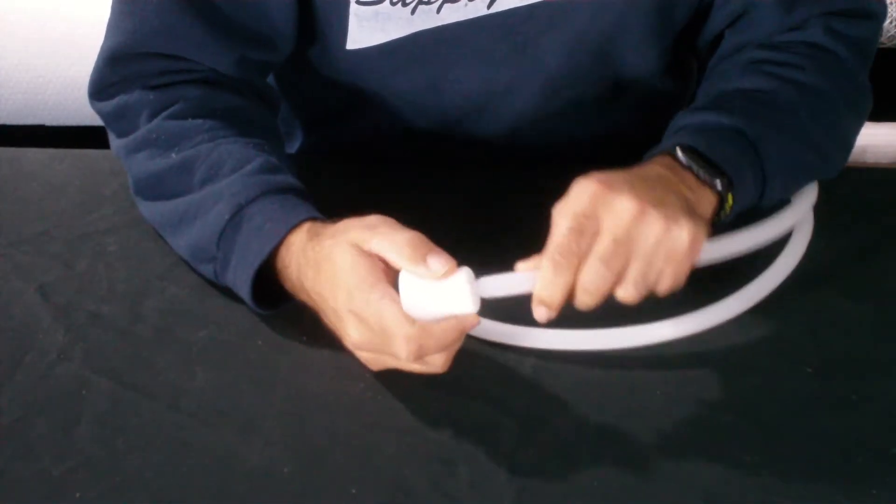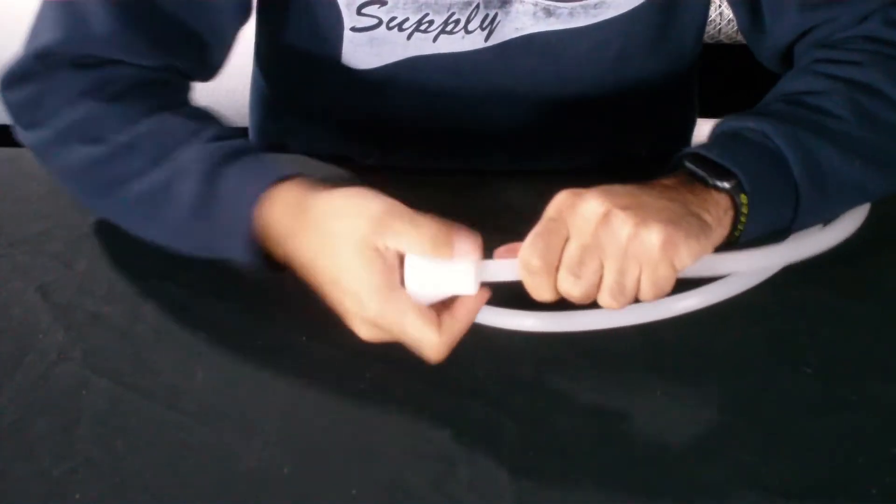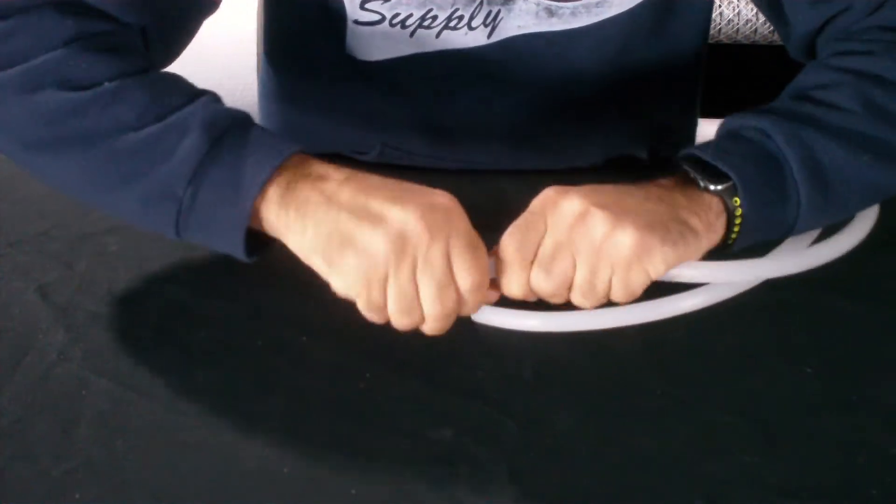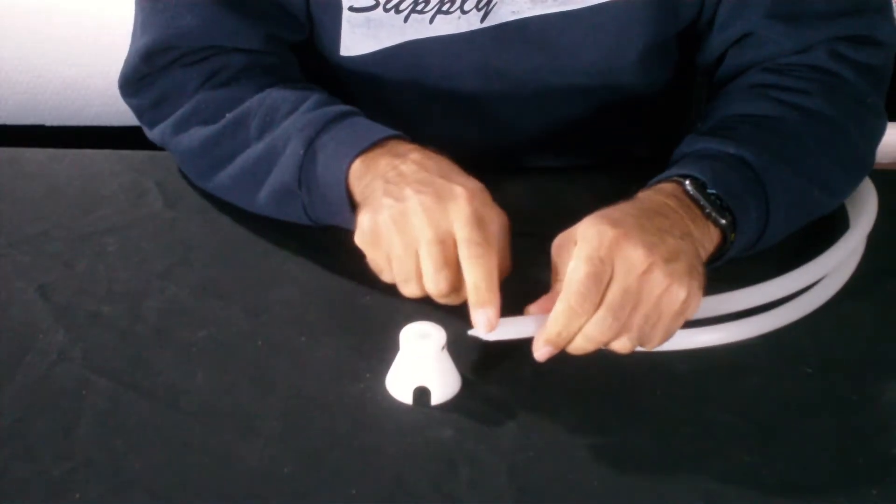And then just working it down on the RIC to get that neck down and to get a nice fit in there. So now this part is necked down, it's slightly smaller.